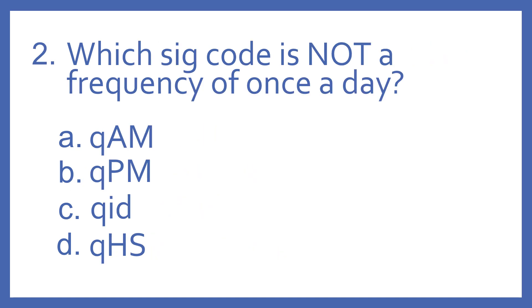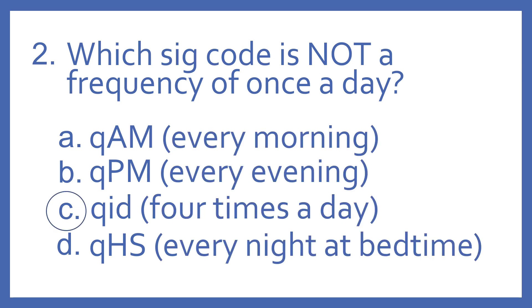Number two, which SIG code is not a frequency of once a day? A, QAM, B, QPM, C, QID, or D, QHS? And the answer is C, QID. That means four times a day. All the other ones are a frequency of once a day. QAM means every morning, QPM means every evening, and QHS means every night at bedtime.